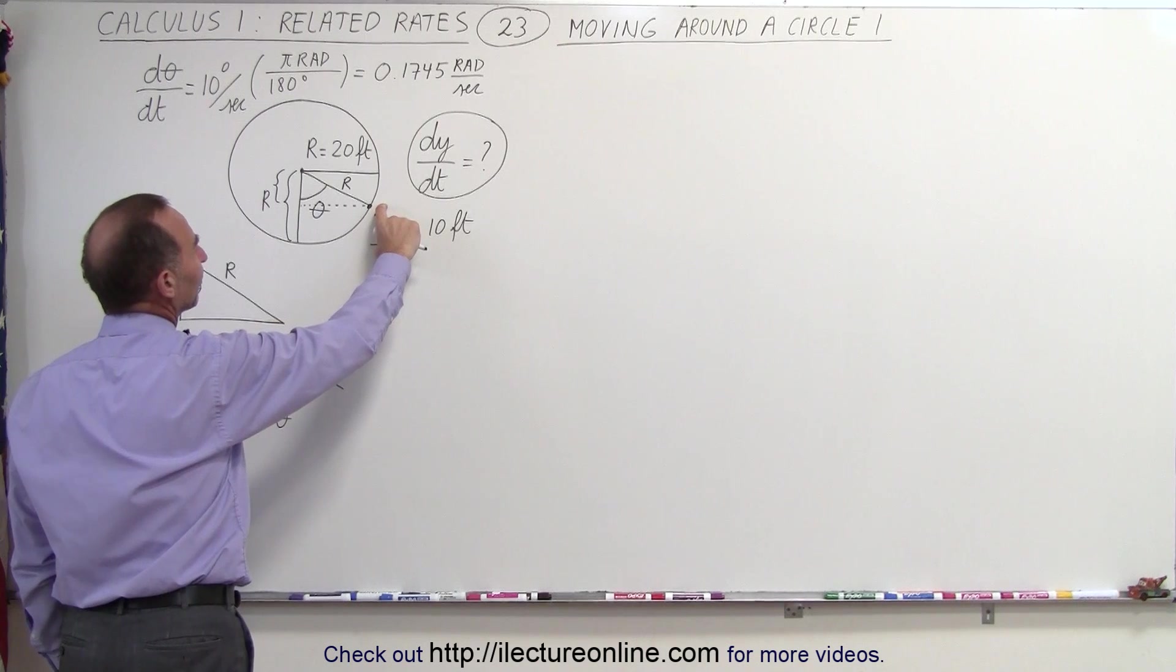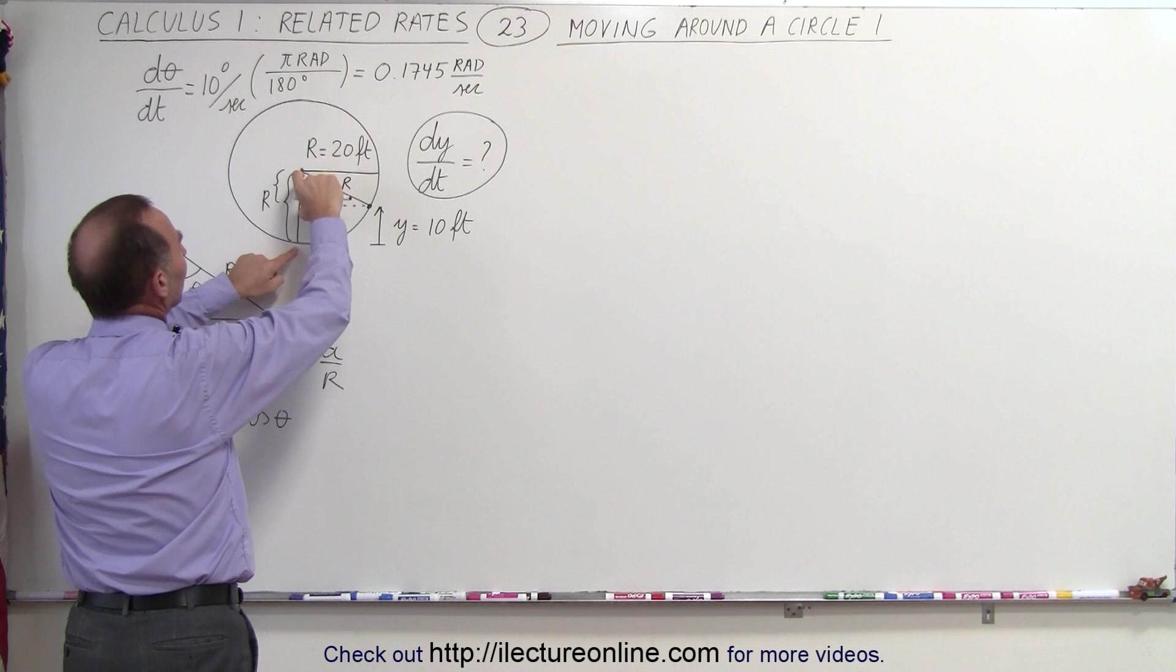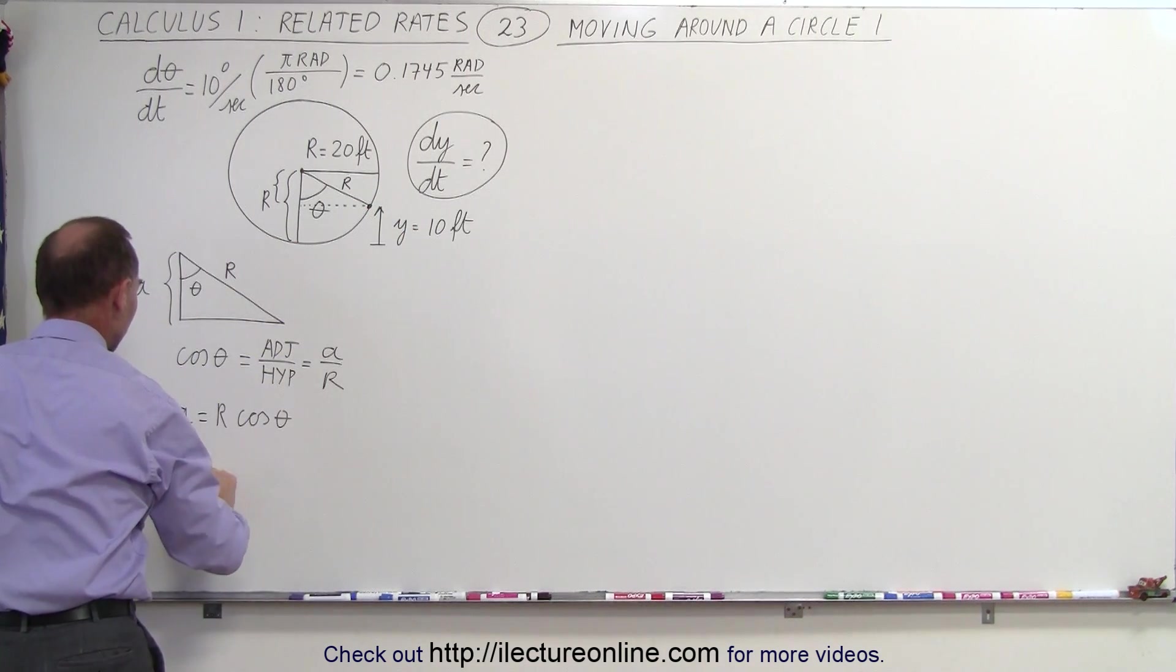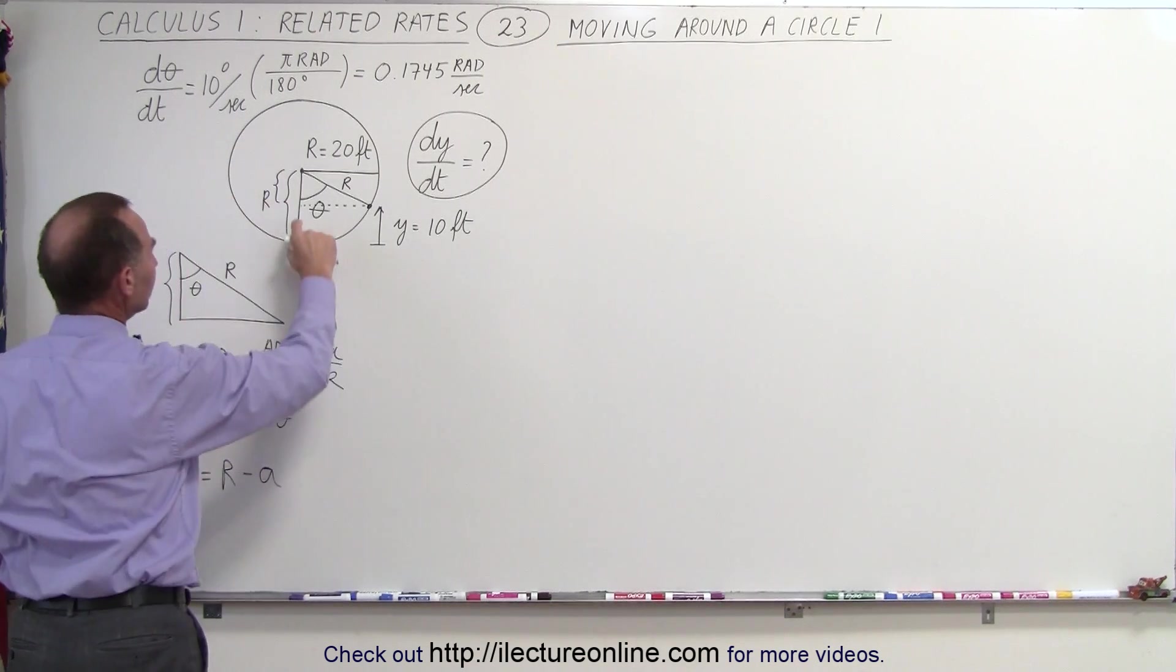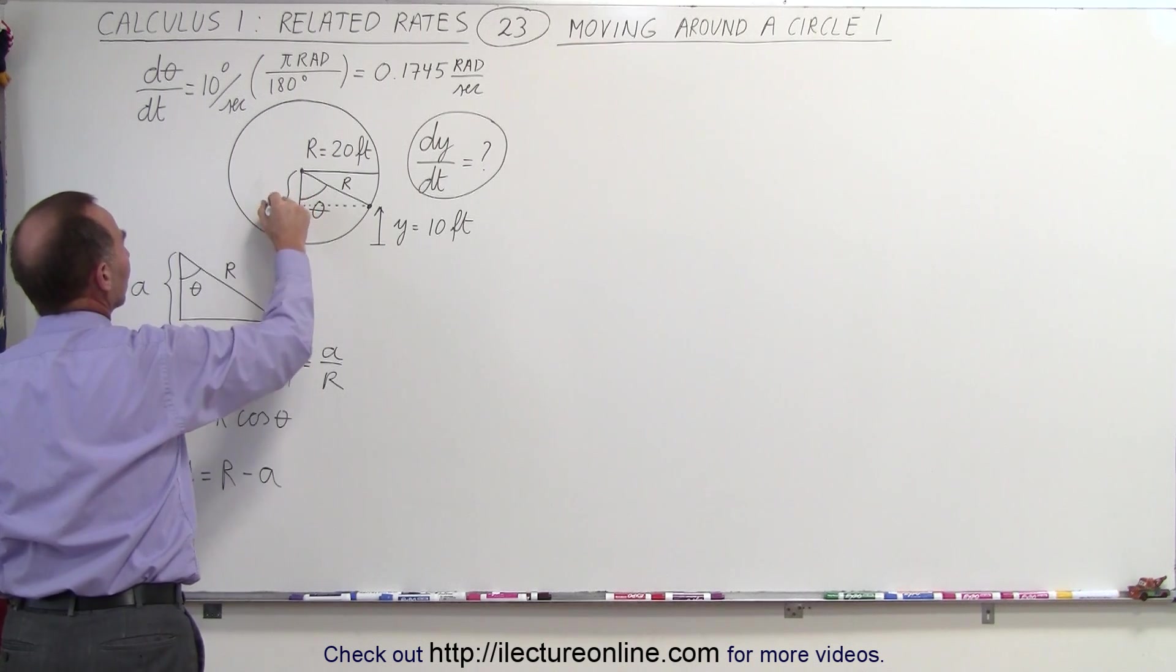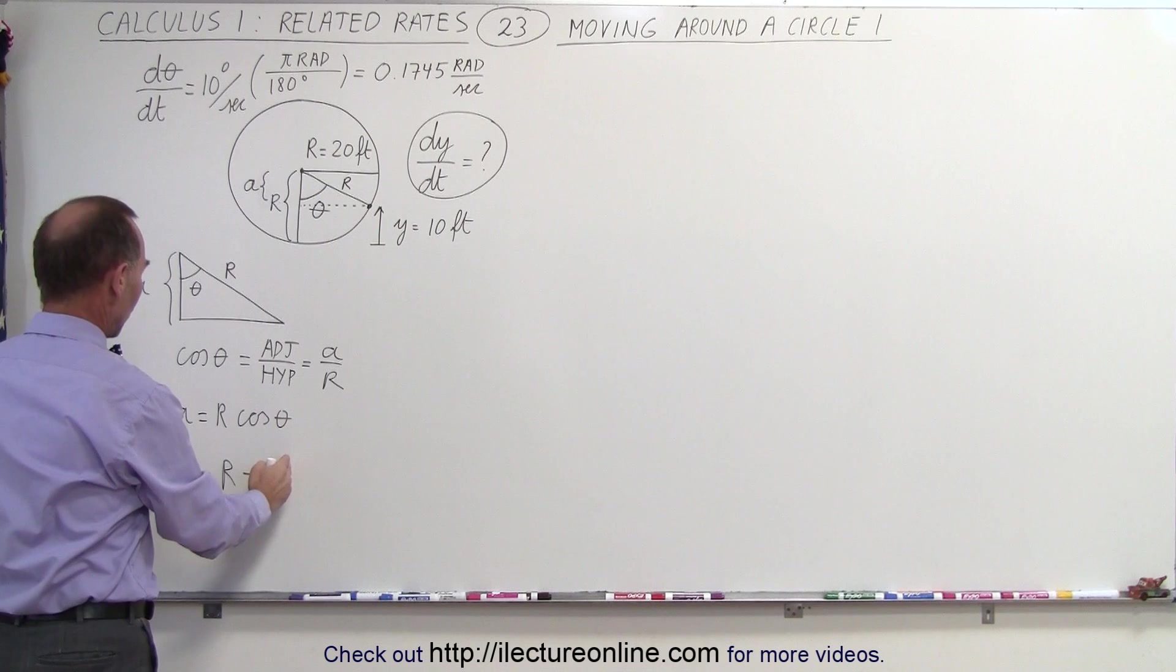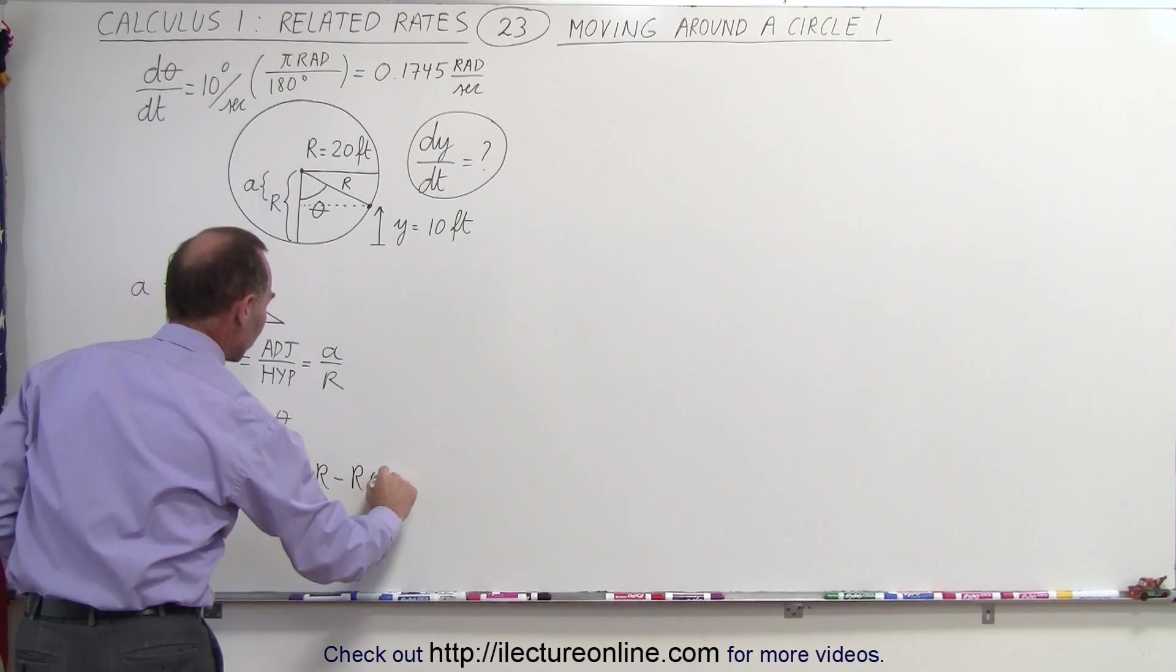And the height y can be defined as simply being this height minus this height right there. So if we take this full distance right here, subtract this from it, we get y. So y can be defined as being r minus a. So this is a, this whole distance is r. Let me rewrite this a little bit better here. So this is r, and this distance here is a. So if we take r minus a, we get y. So y can be expressed like that, which is equal to r minus r times the cosine of theta.